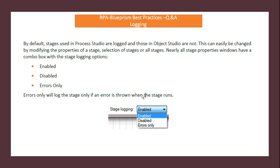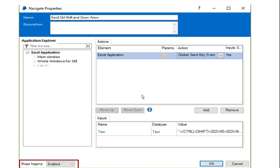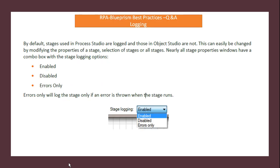The bot may have failed at step one, step two, or step three. But most RPA tools — about 90% — don't have tracing; all of them use logging functionalities. In Blue Prism, by default, stages used in Process Studio are logged, but those in Object Studio are not. This can easily be changed by modifying the properties of the stage. When you navigate to properties, you can see stage logging options: enabled, disabled, and errors only.